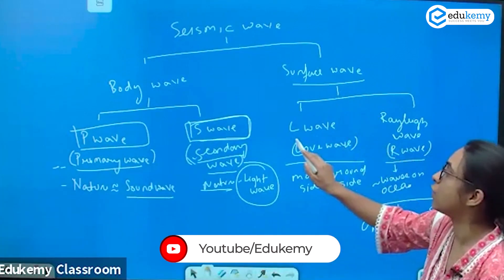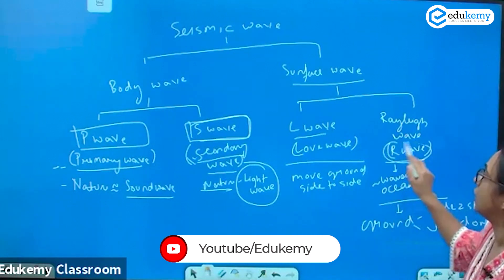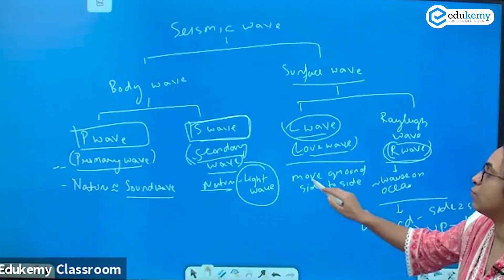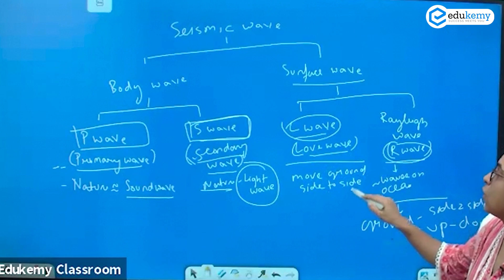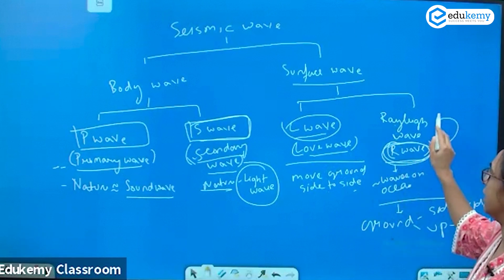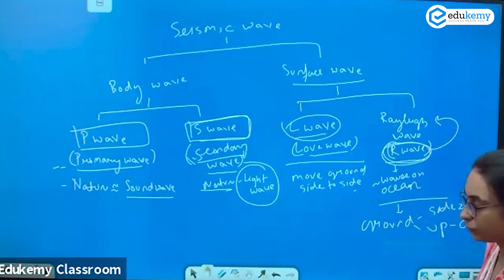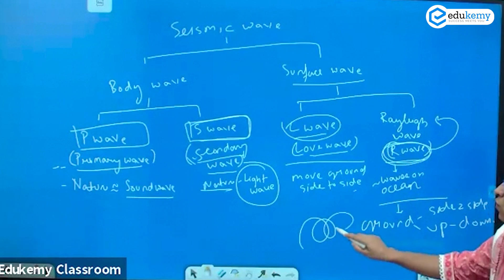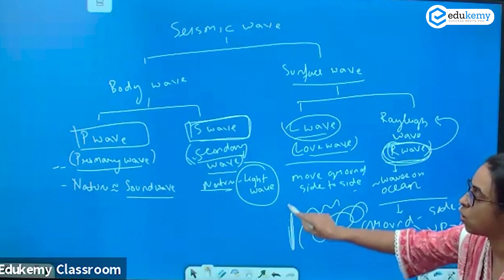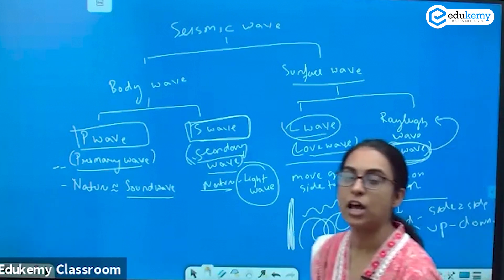The surface waves are of two types: the L wave and the R wave. The L wave is called the Love wave — it moves the ground from side to side. The R wave is the Rayleigh wave; like ocean waves, it moves the ground not only side to side but also up and down.